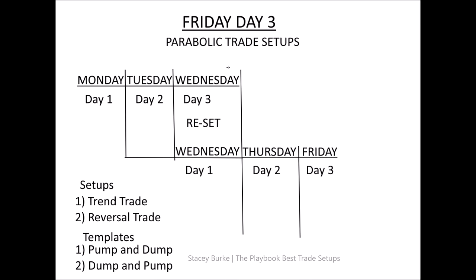Friday's templates for day three: Monday is day one, Tuesday is day two, Wednesday is day three. Wednesday resets and becomes a new day one — Wednesday is day one, Thursday is day two, Friday is day three. Monday is the opening range, Wednesday is the midweek range, Friday is the closing range. On day three I'm looking for either a trend trade continuing the existing move, or a reversal trade — a parabolic day three that rifles into traders chasing the trend.